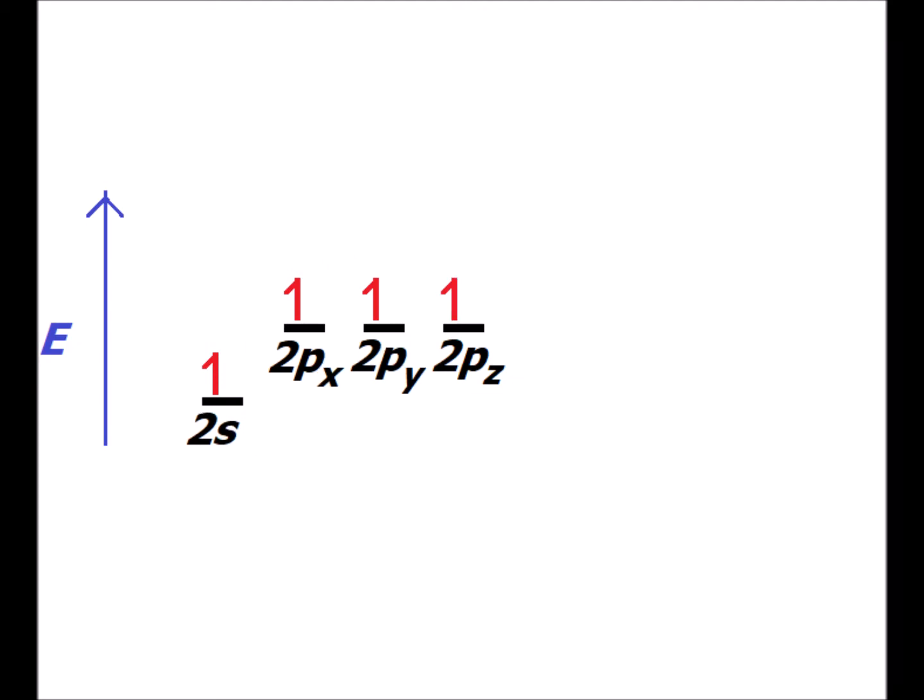First, we can imagine that we can form an excited state by promoting one of the 2s electrons to the 2pz orbital. Now we see that we have four half-filled orbitals. So by the valence bond theory, carbon should be able to make four bonds, which we know is true from experience.